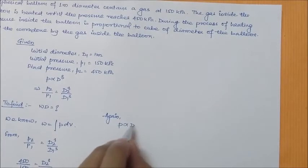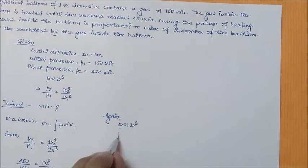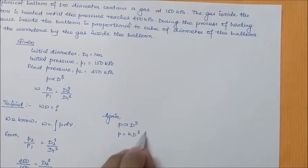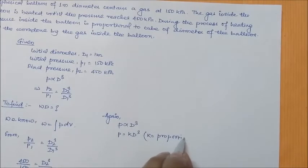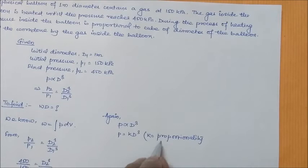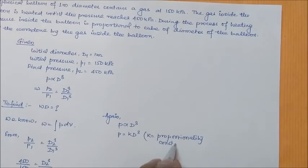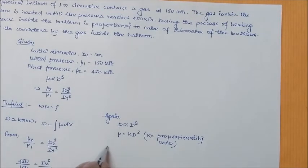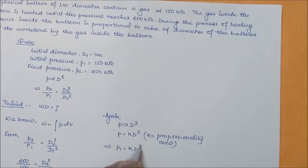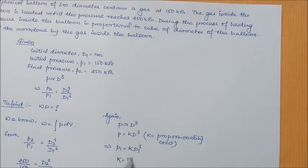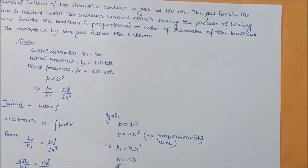Again, p is proportional to d cube, which means p is equal to k into d cube where k is proportionality constant. Now we can write this as p1 is equal to k d1 cube. From here by putting the value of p1 and d1, we can get the value of k as 150. So now we have got this also.